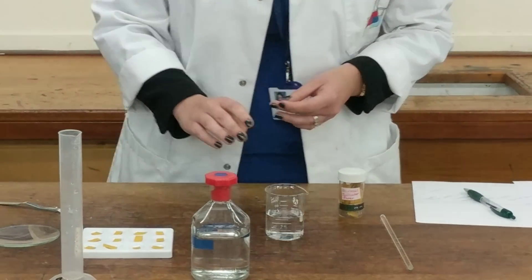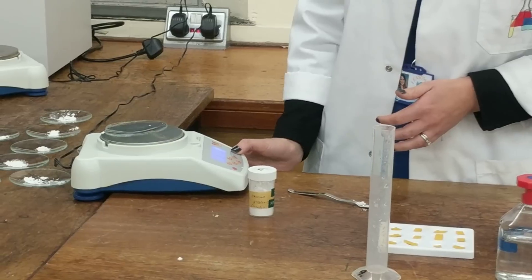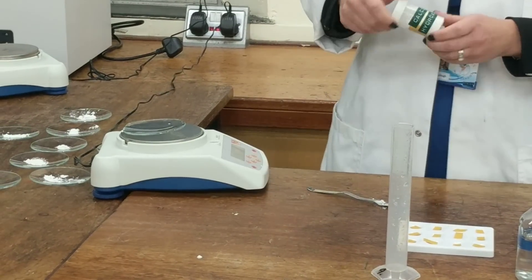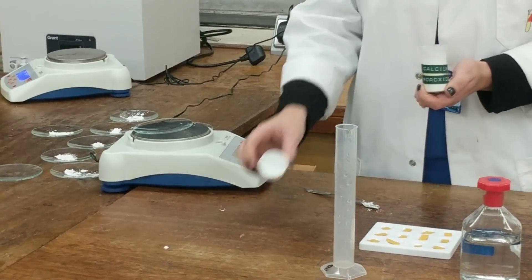We'll then need to weigh out on a watch glass, on our balance, 0.3 grams of calcium hydroxide. We'll be adding 0.3 grams each time.